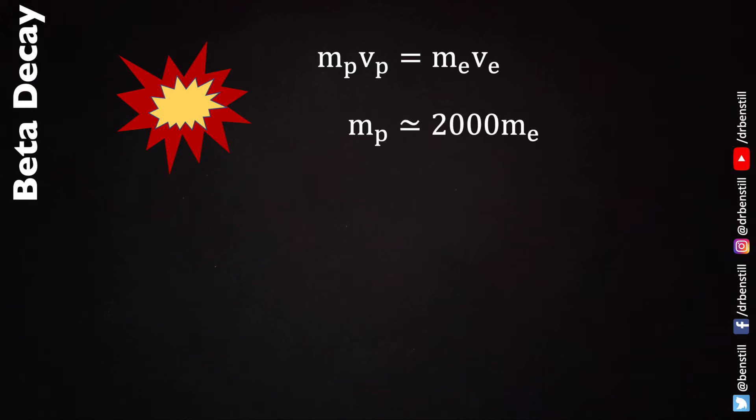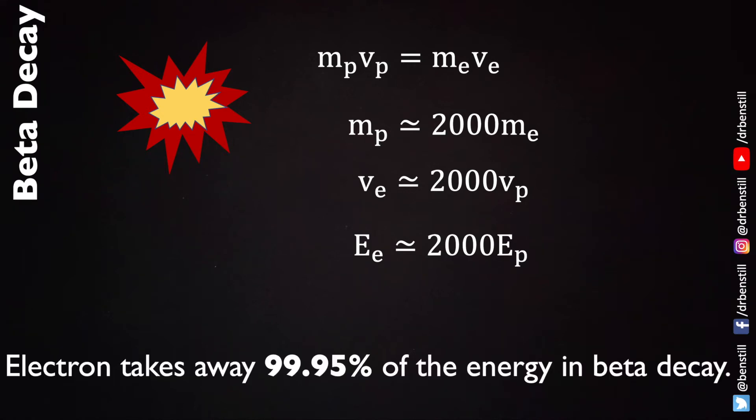Interestingly the mass of the proton is about 2000 times the mass of the electron so that's quite an imbalance. That means that the velocity the electron leaves a beta decay is 2000 times greater than the velocity a proton would leave from this beta decay. This would mean that the energy that the electron has is 2000 times greater than the energy of the proton. In beta decay an electron takes away 99.95 percent of the energy that is released.